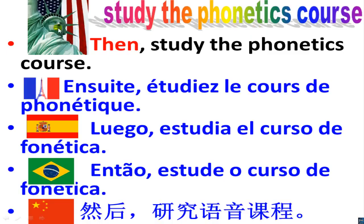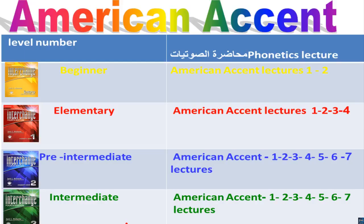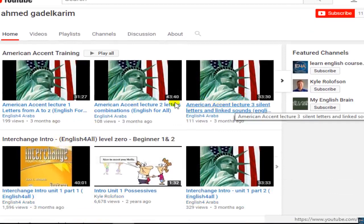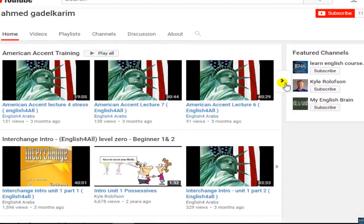The course is American English, so we also need to study the phonetics course. If you are a beginner, you will have American accent lectures 1 and 2. If you are elementary, American accent lectures 1 through 4. If you are pre-intermediate or intermediate, you can follow American accent lectures 1 to 7. The American phonetics course has 7 lectures.